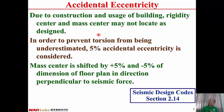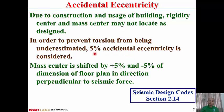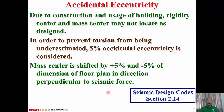Due to construction or usage of the building, the rigidity center and the mass center may not locate at the positions as designed. In order to prevent the torsion from being underestimated, 5% accidental eccentricity is taken into consideration. Therefore, the mass center is shifted by plus 5% or minus 5% of the dimension of the floor plan in the direction perpendicular to the seismic force. This is stated in Seismic Design Code section 2.14.